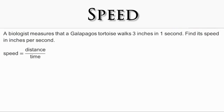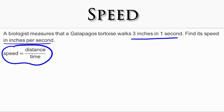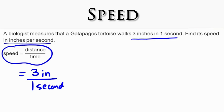Now let's look at this example. Speed is going to be equal to — well, how far did the tortoise walk? It walked three inches. And how much time did it take? One second. So you can see, as a rate, the speed of the tortoise is three inches per second. So for every one second, the tortoise walked three inches.